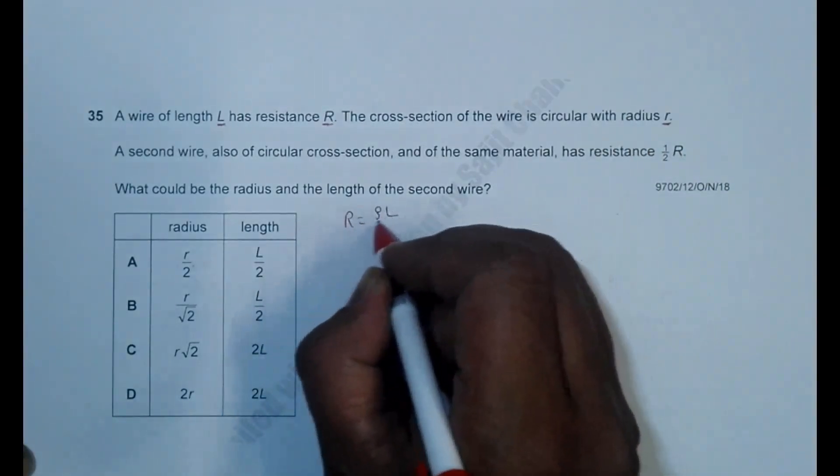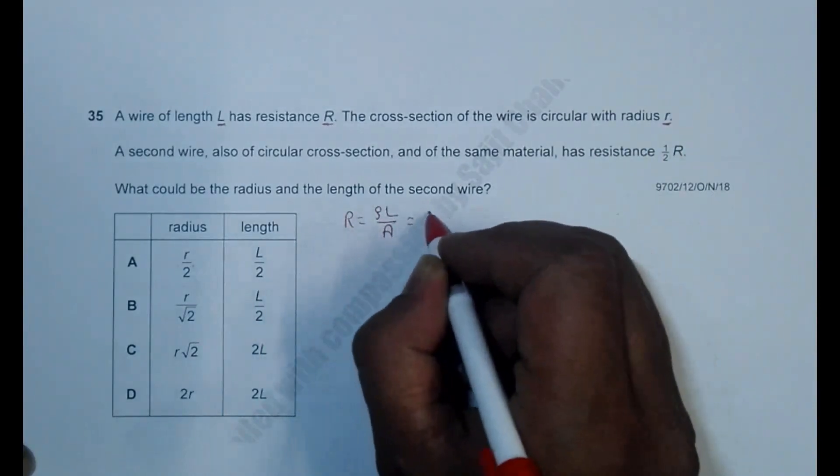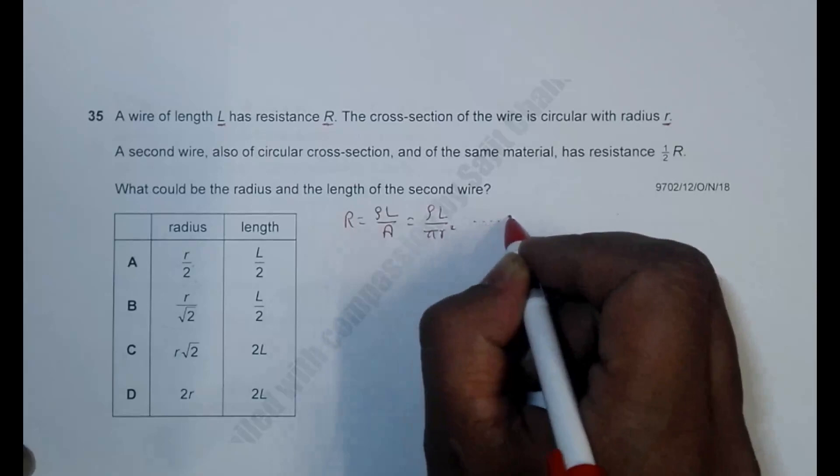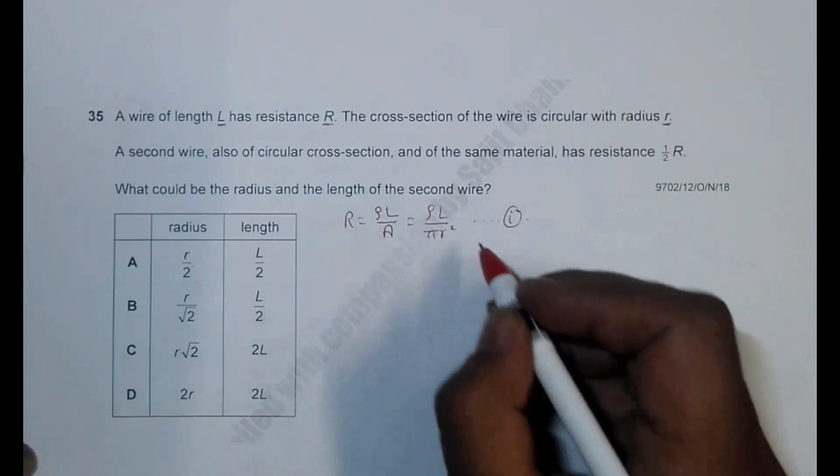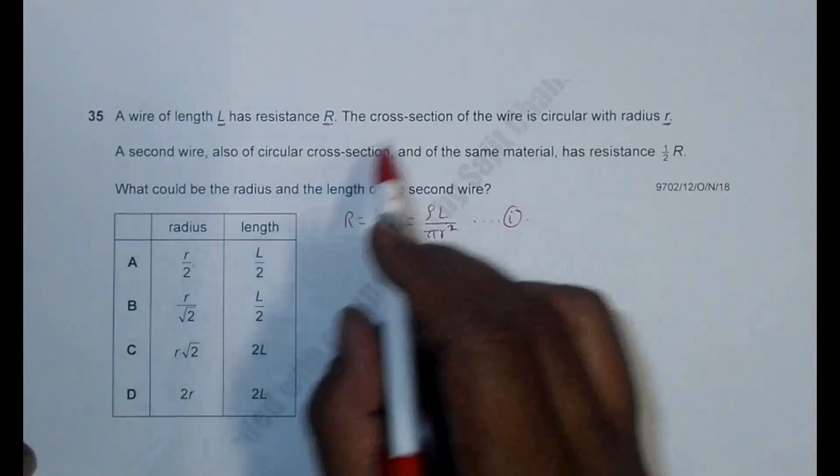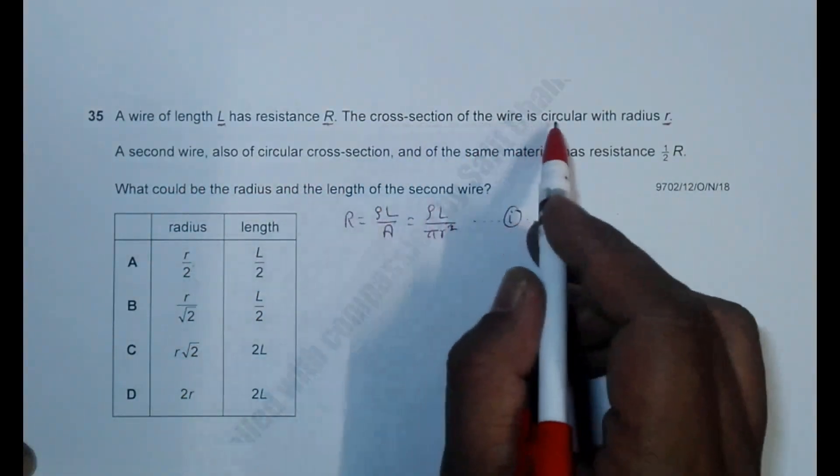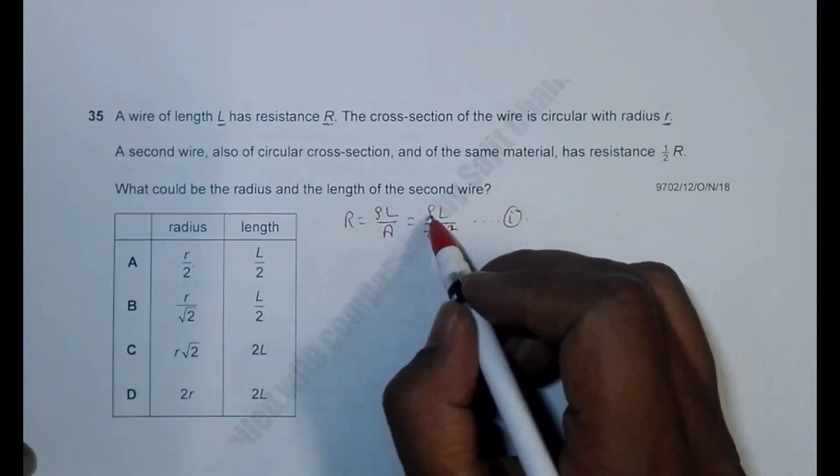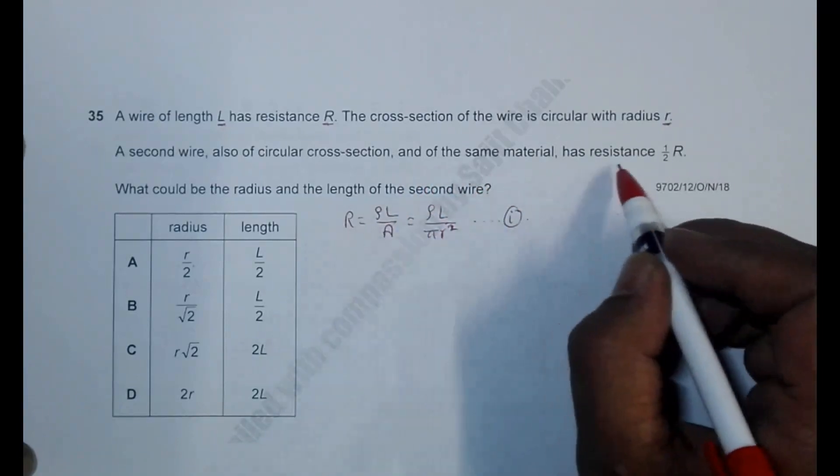That's equal to ρL by πr², so let's say that's equation number one. Then a second wire, also of circular cross-section and of the same material, which means the resistivity ρ will be constant, has resistance 1/2 R.